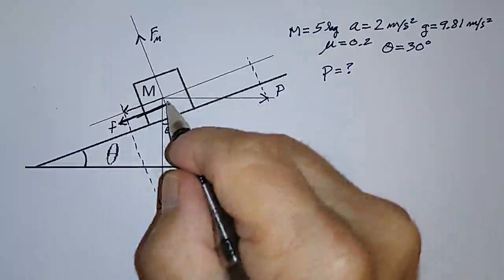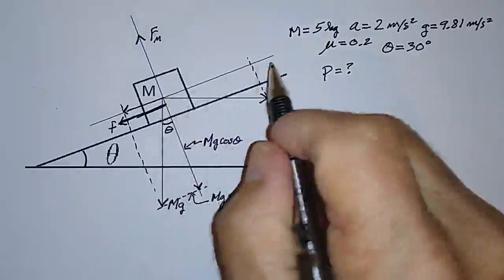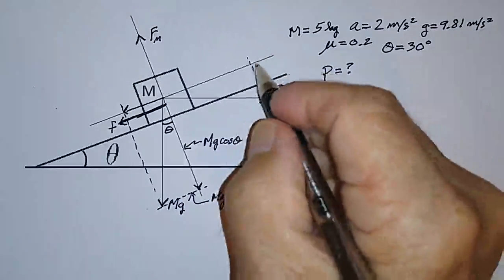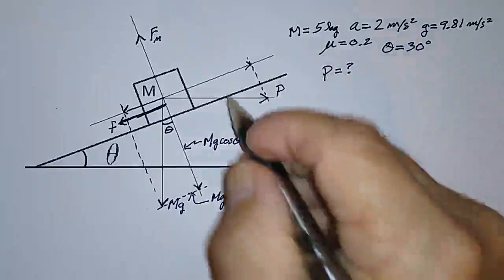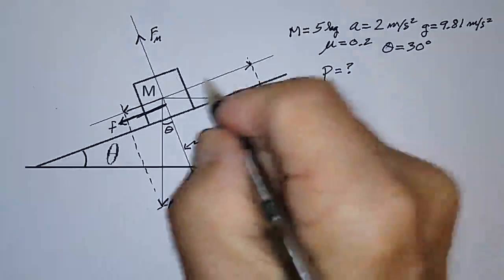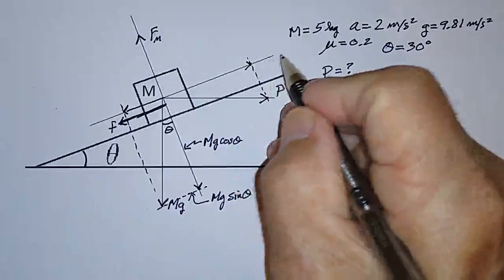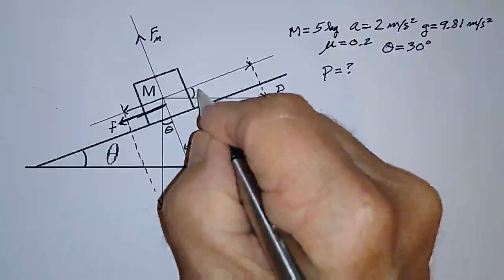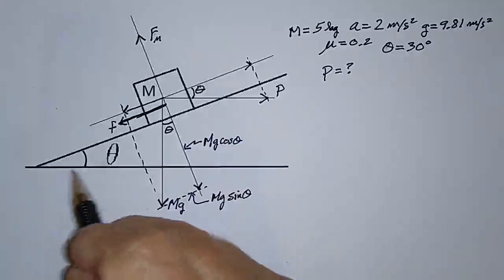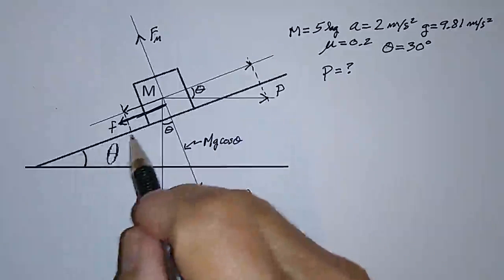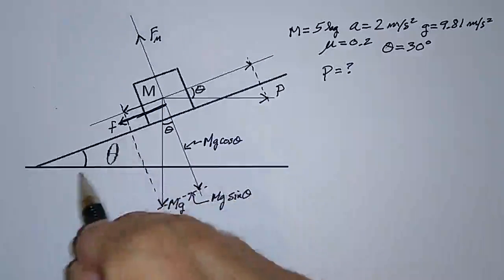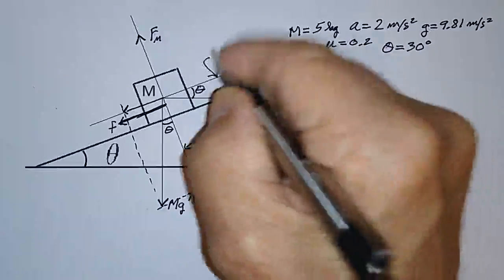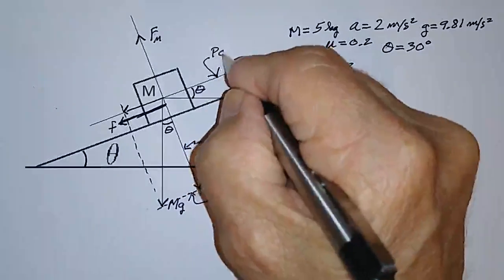onto the component that's parallel to the plane in this direction. So this is actually the piece of P that's actually pushing the whole thing up the ramp. And this angle here is also theta, which you can easily see. It makes the same angle with the horizontal. So that makes this P cosine theta.